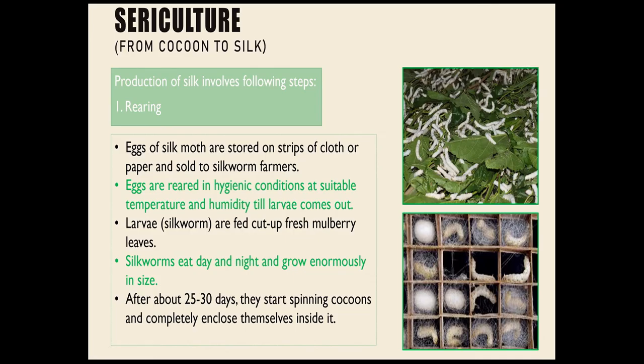Now let us talk about how silk moths are used for obtaining silk for commercial purposes, which is called sericulture. In sericulture, the production of silk involves different steps. The first step is rearing. Eggs of the silk moths are stored on strips of cloth or paper and sold to silkworm farmers. The farmers rear the eggs in very hygienic conditions at suitable temperature and humidity, leading to hatching of the eggs and the larva coming out. The larva feeds on fresh mulberry leaves for around 25 to 30 days.